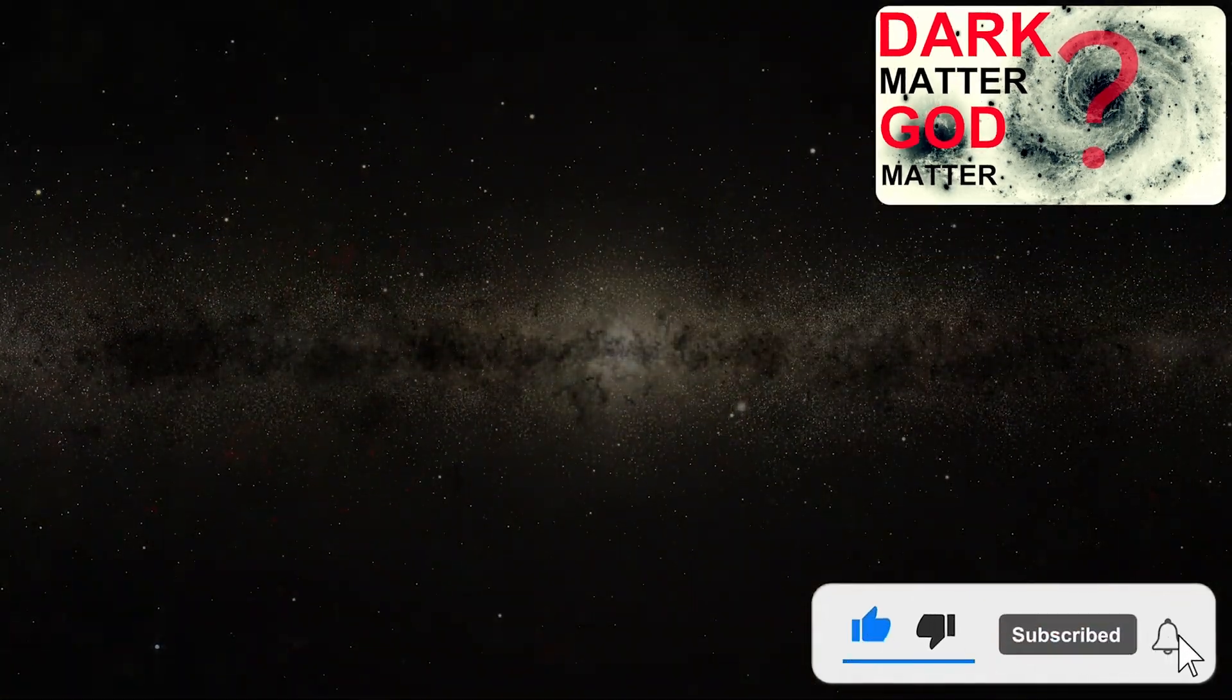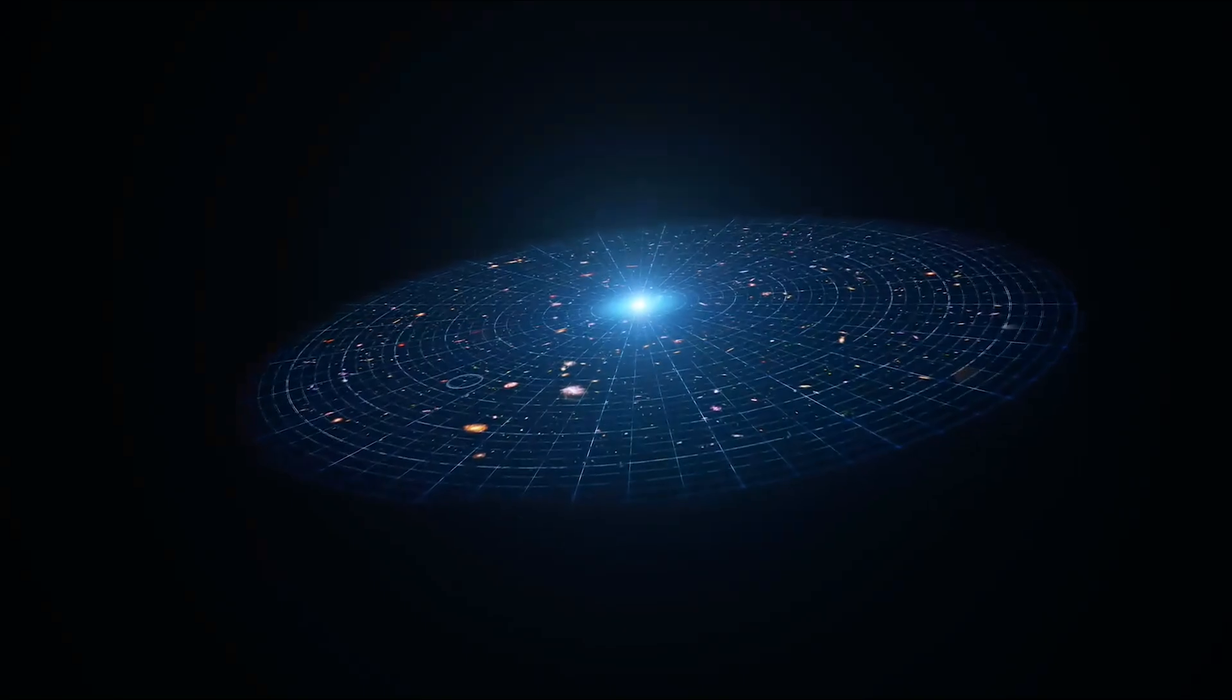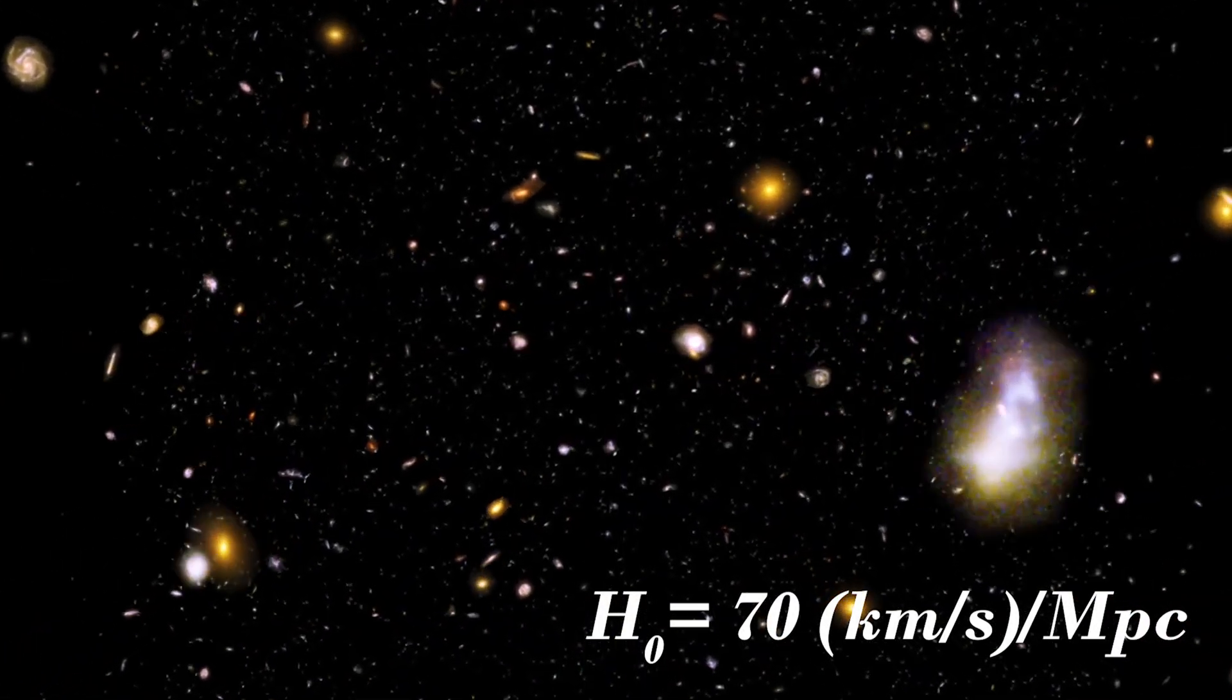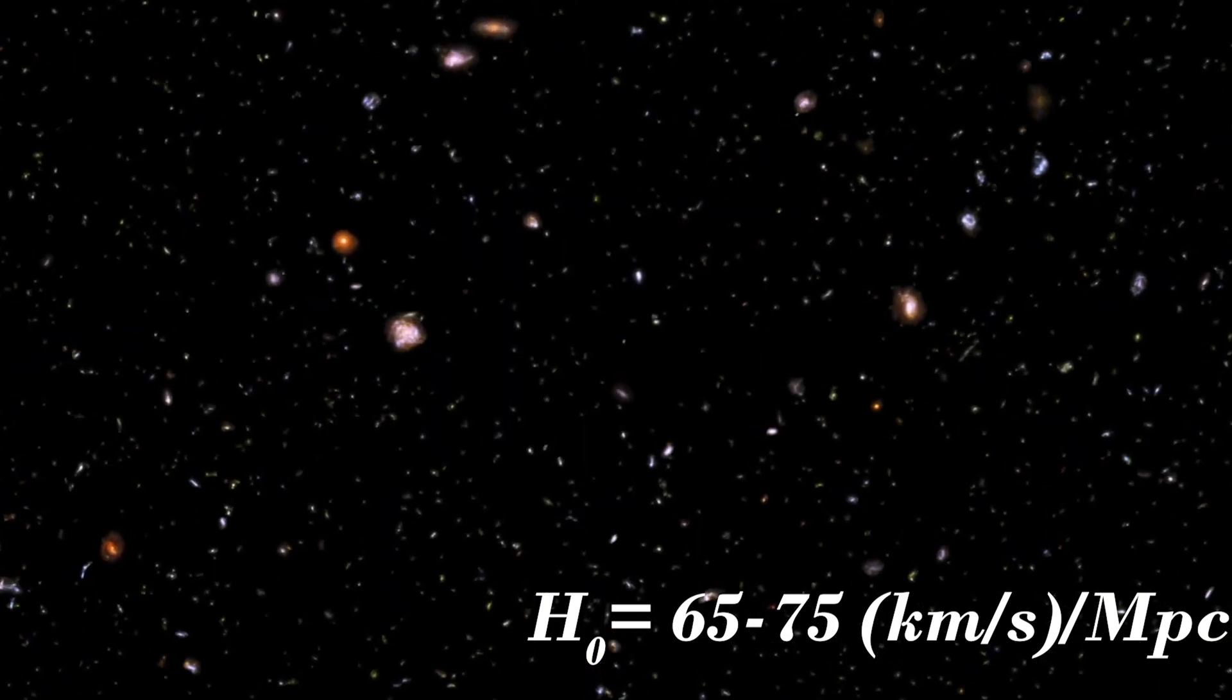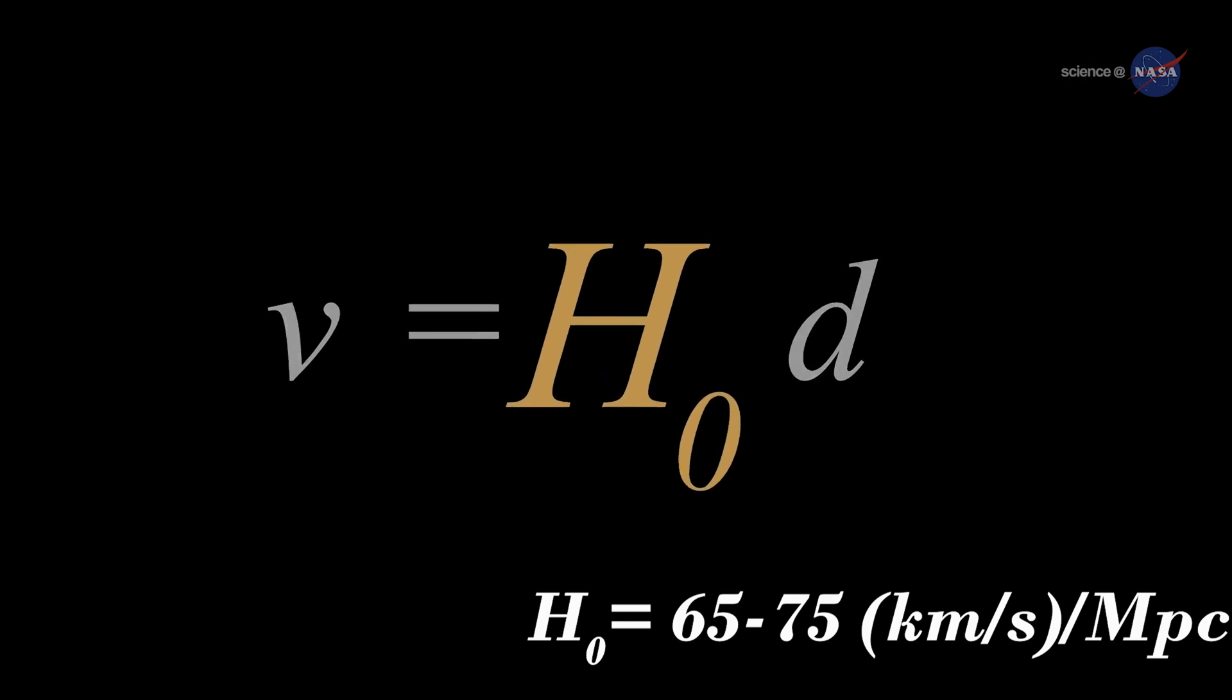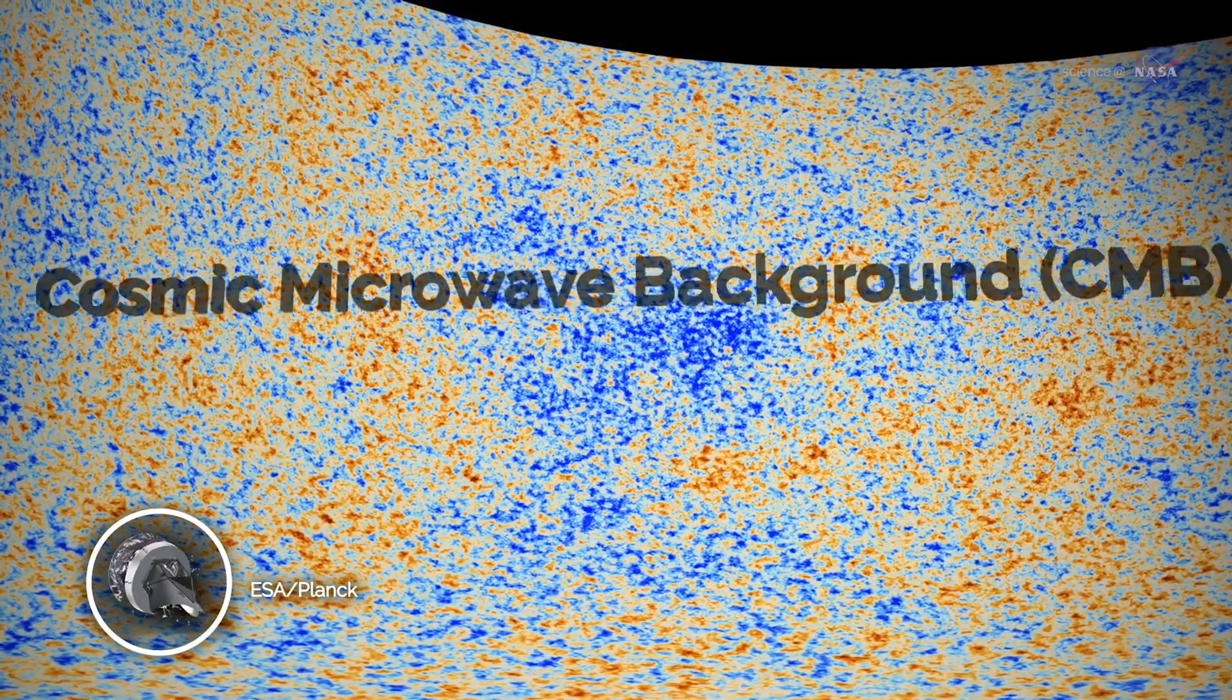We discussed earlier that the expansion of space is happening at a rate of almost 70 kilometers per second per megaparsec, which is also known as Hubble constant. However, the value of the Hubble constant is not always 70. It varies with observation. There are two main methods by which we evaluate the value. The first one is cosmic microwave background CMB, and the second one is standard candles. First, let's talk about the cosmic microwave background CMB.